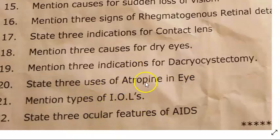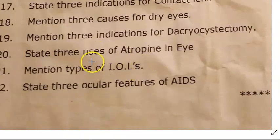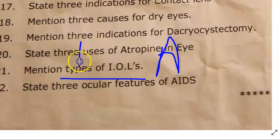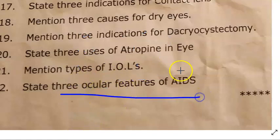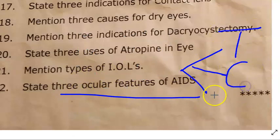Atropine can also be used in malignant glaucoma. Types of IOLs: anterior chamber IOL, posterior chamber IOL (most common), iris-claw IOL, toric IOL, bifocal IOL — classify by position and material. Ocular features of AIDS: toxoplasma posterior uveitis, cytomegalovirus retinitis, fungal corneal ulcers, etc.